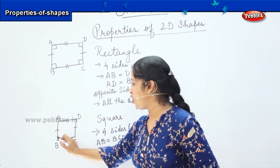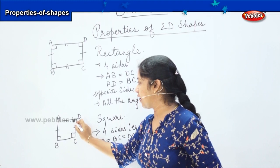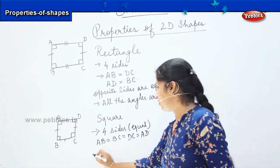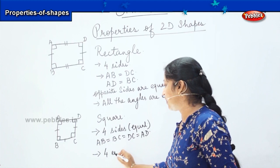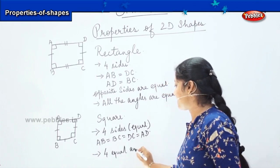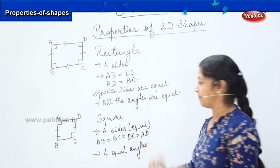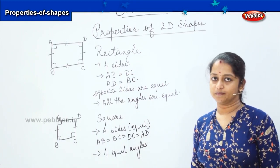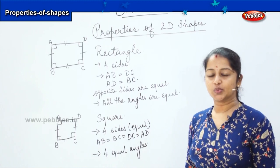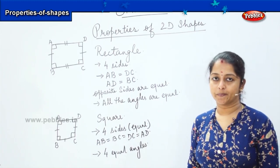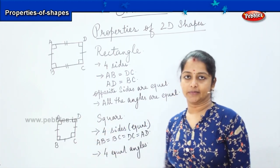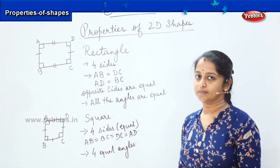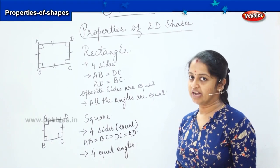Coming to the third point, all the angles are also equal. How many angles does a square have? One, two, three, and four — so you have four equal angles. And what line is used here? Is it a curved line or a straight line used to form this 2D shape? This is formed with a straight line. Both the rectangle and the square are formed with straight lines.